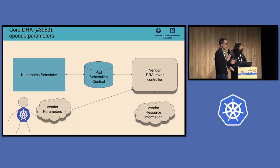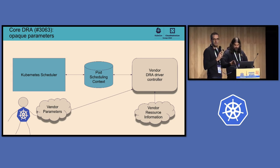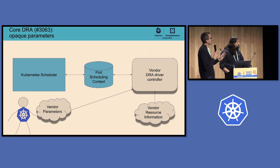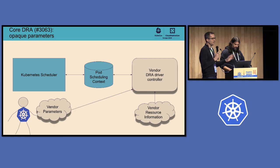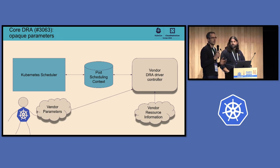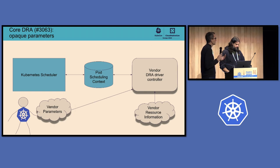With opaque parameters, handling of those parameters is done entirely by the control plane component of a DRA driver. The driver gathers information about its resources from nodes using CRDs. The vendor driver knows about the resource — where it's available and where it could be allocated. At the same time, the scheduler knows about other things like memory, RAM, and CPUs. We need to coordinate this, mostly for delayed allocation, where we wait for a pod to start being scheduled. Communication happens through a pod scheduling context object.